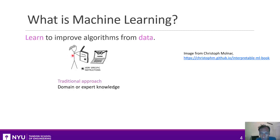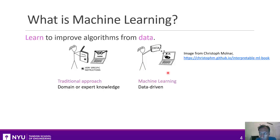If you've done any computer programming, this is probably what you've done. Anything you would take, for example, in an algorithms class would be like this. Machine learning is a different approach. Instead of using expertise per se, what we use is data — we provide data of maybe past examples of what the program should do, and have the computer develop the procedure to solve the task.